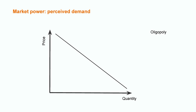In an oligopoly, the relationship between price and quantity is stronger in terms of perceived demand. Any changes in price will correspond to important changes in quantity sold. This is because the oligopolists are price makers — they can change prices, and these changes will have an impact on perceived demand.